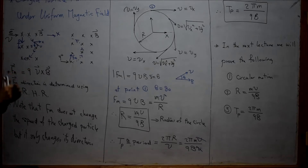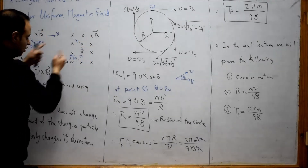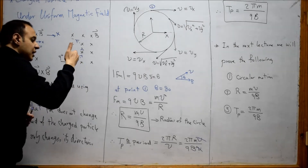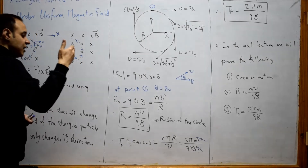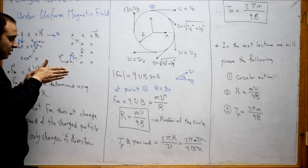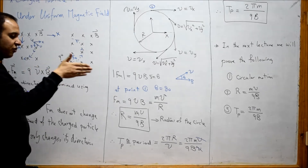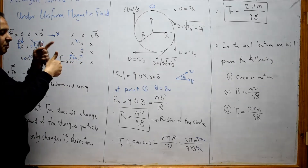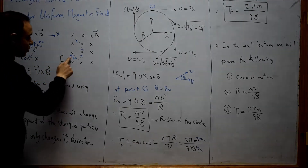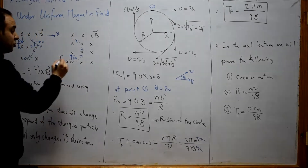Let's take another example: a positive proton, a positive charge, in the same region of this magnetic field, which is also perpendicular to the whiteboard and directed into it. To determine the direction of the magnetic force, we move from V to B. This gives the direction of the thumb upward. Since this is a positive charge, the force is in that direction — in the positive y direction, upward.